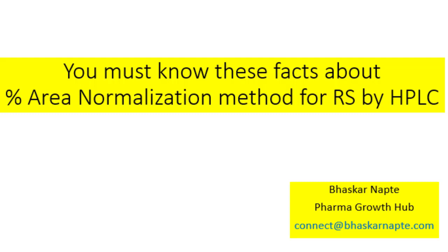In this technique, you assume that the entire area from impurities plus your drug substance or API is equal to 100%. The important facts you must know when thinking to use the percent area normalization method for impurity quantification — that is the topic of today's discussion.